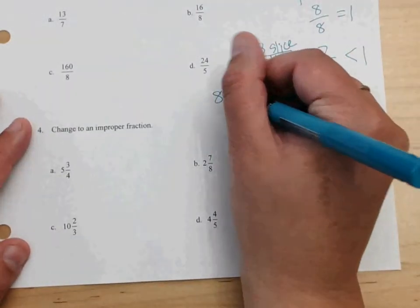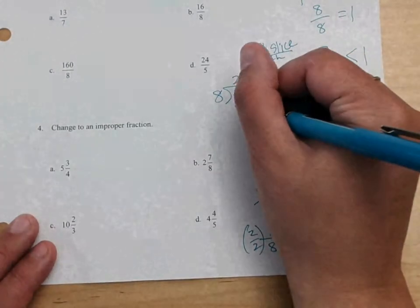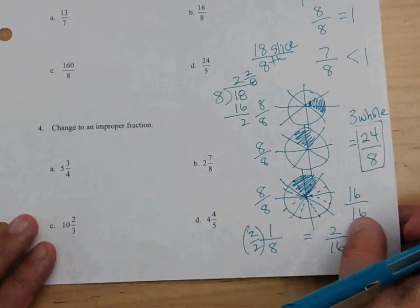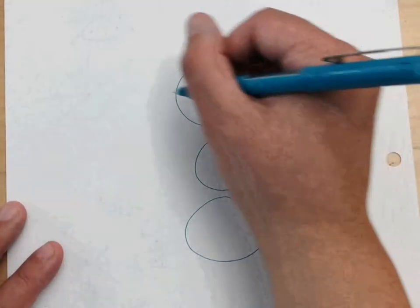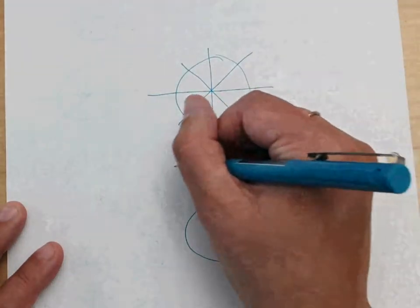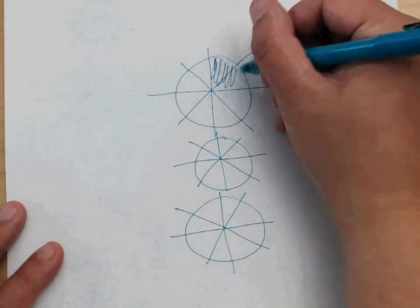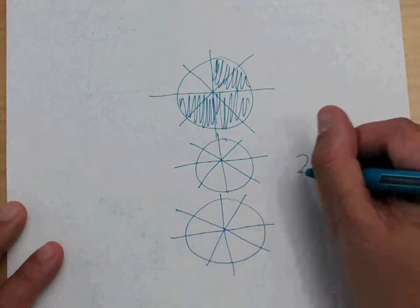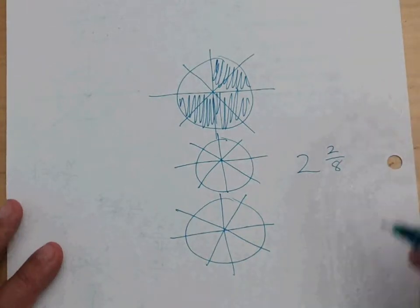That's what we call an improper fraction. We have more than one whole. If you have a fraction that is bigger than one, it's improper. But I want to know how many whole pizzas could I make and how many leftovers do I have. So all this is is a division problem. I'm going to divide eight into eighteen. Does anybody know how many times eight goes into eighteen? Two times. Two times eight is sixteen. Two. Two eighths.